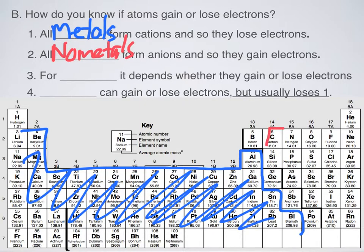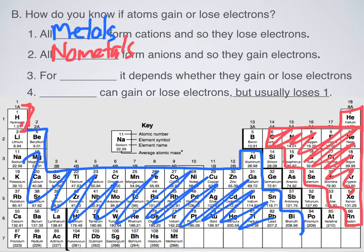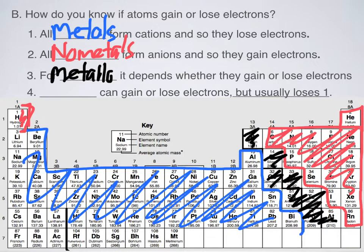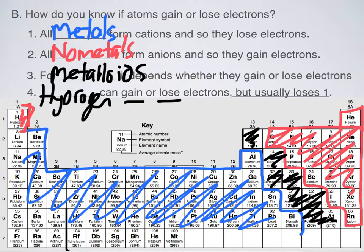Non-metals form negatively charged ions, or anions. Yes, I'm including the noble gases and hydrogen in the non-metals. For metalloids — boron, silicon, germanium — it really depends, so we won't really be seeing a lot of them in compounds. Even though hydrogen is a non-metal, it's sort of always an exception — it can gain or lose electrons, but usually it loses one. So normally it acts in a more metallic way, though it can do both.